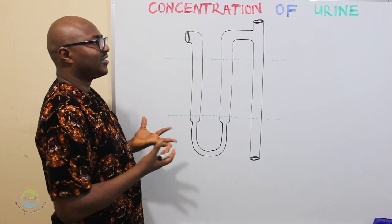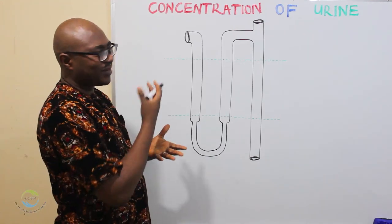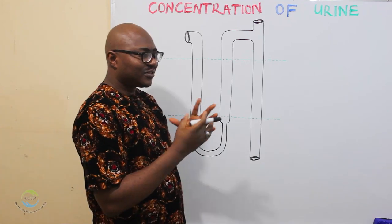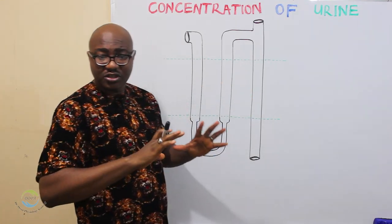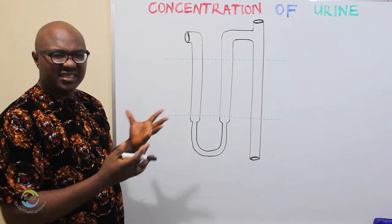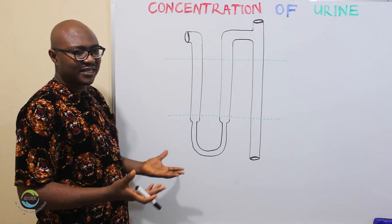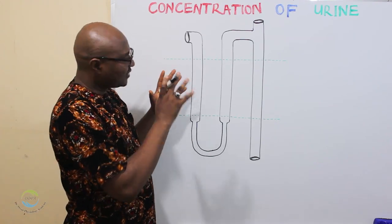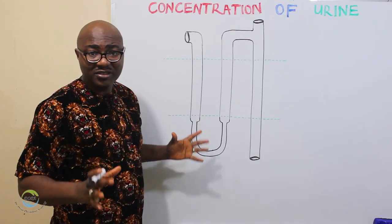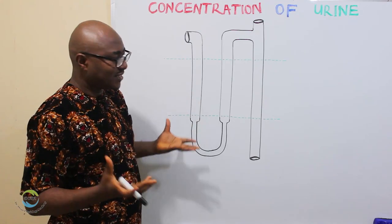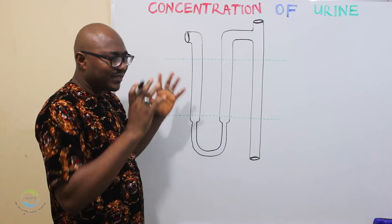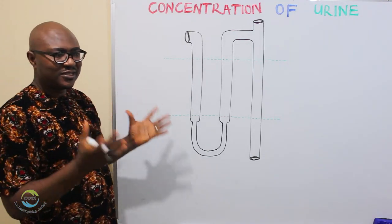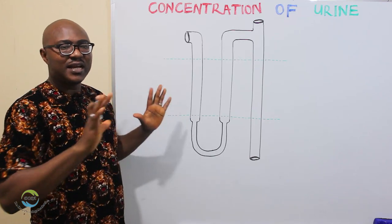Today we're going to be dealing with concentration of urine. What's so special about concentration? Why not dilution of urine? We talk about things because they have special significance. A dilute urine is the default. The body expects that you should take in enough water — 60% of your body weight is water. So your body loves water and expects you to always take it, meaning dilute urine is the default.